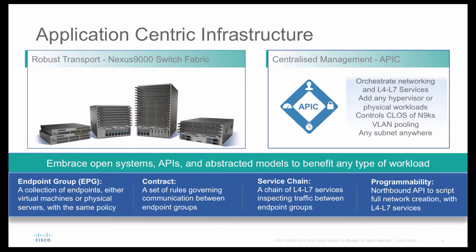ACI fabric uses an abstracted model with collections of endpoints organized into endpoint groups (EPGs). You can group endpoints by IP address, subnet, VM attributes, and more. When endpoints are grouped into an EPG, you apply policy at the EPG level using contracts. A contract is essentially a whitelist filter specifying what traffic is allowed or denied. For deeper traffic analysis, you can forward traffic to a firewall, next-generation firewall, next-generation IPS, router, or load balancer by inserting L4 to L7 services using a service chain.